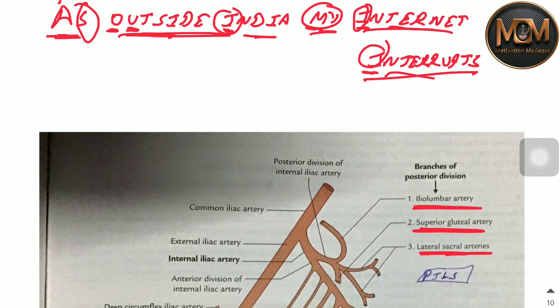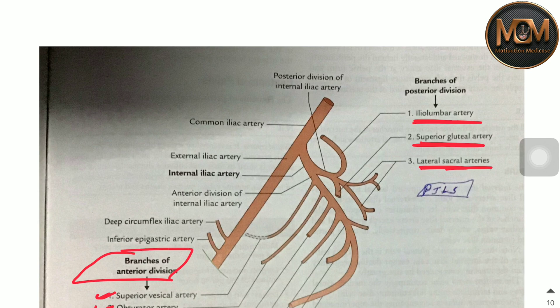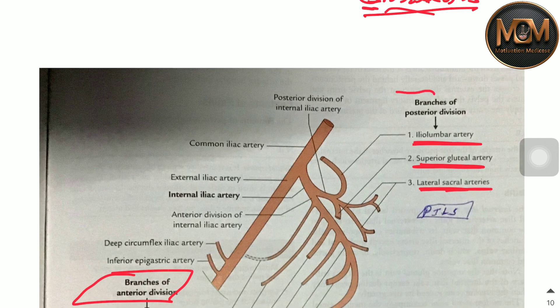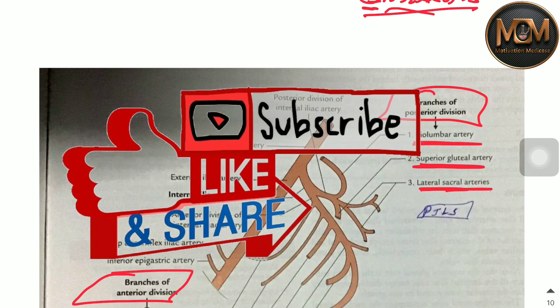So these are the branches of the anterior division and the branches of the posterior division of the internal iliac artery. That's it for this video. If you like it, please like, share, and subscribe, and don't forget to press the bell icon to get notifications of our videos.